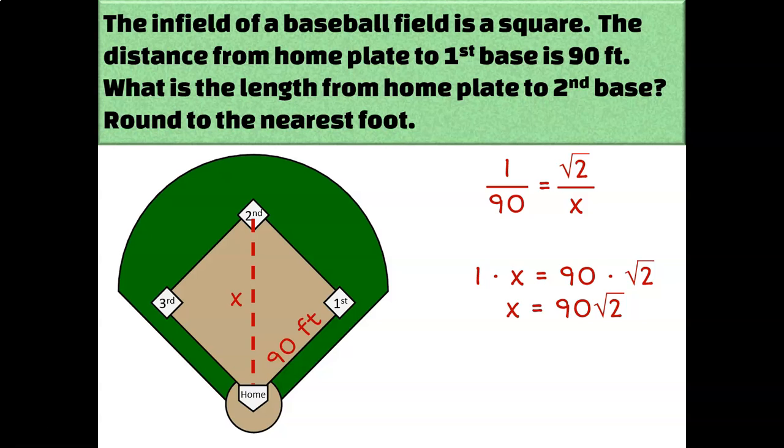Which if you're Yadier Molina probably doesn't mean a whole lot to you. Instead, we would probably want a decimal approximation. So let's just go ahead and round that to the nearest foot. That is what the directions say to do. Type that in your calculator, 90 times the square root of 2, and we get that X, or the distance from home plate to second base, is approximately 127 feet.